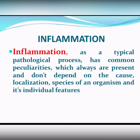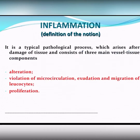This is a typical pathological process which arises always after damage of tissue and consists of three main vessel-tissue components. These are alteration, violation of microcirculation, exudation and migration of leukocytes, and the last one is proliferation.